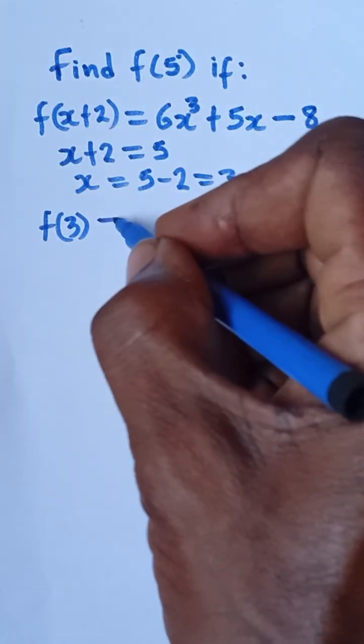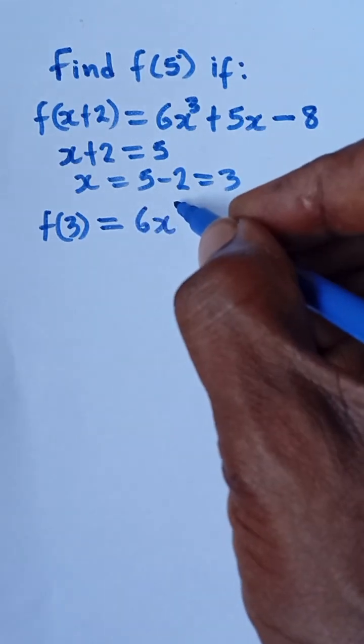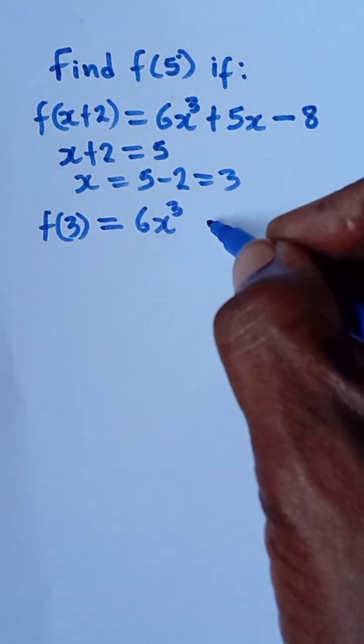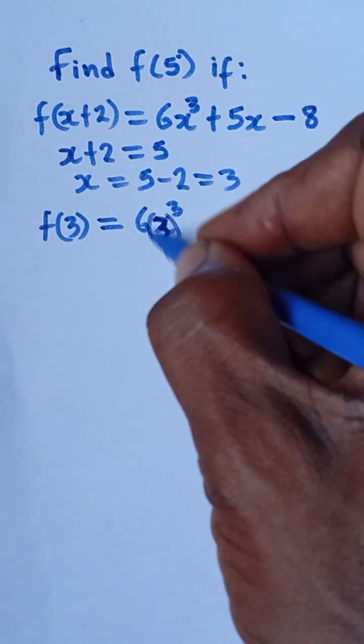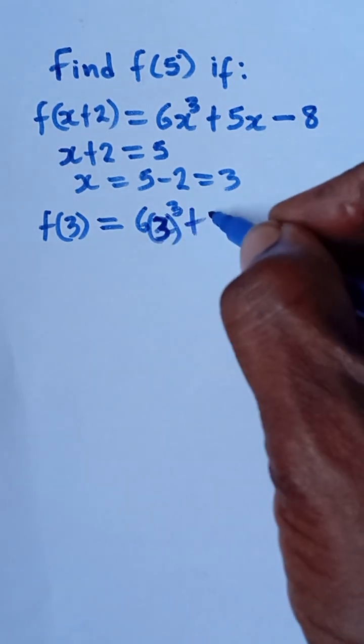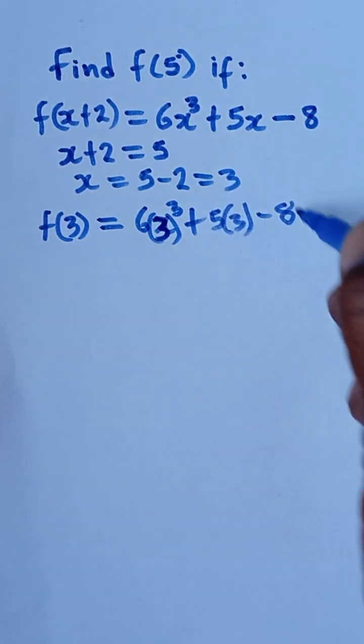is equal to 6x raised to the power 3. Let me put 3 now. In place of x, we'll be putting 3. Then plus 5 times 3 minus 8.